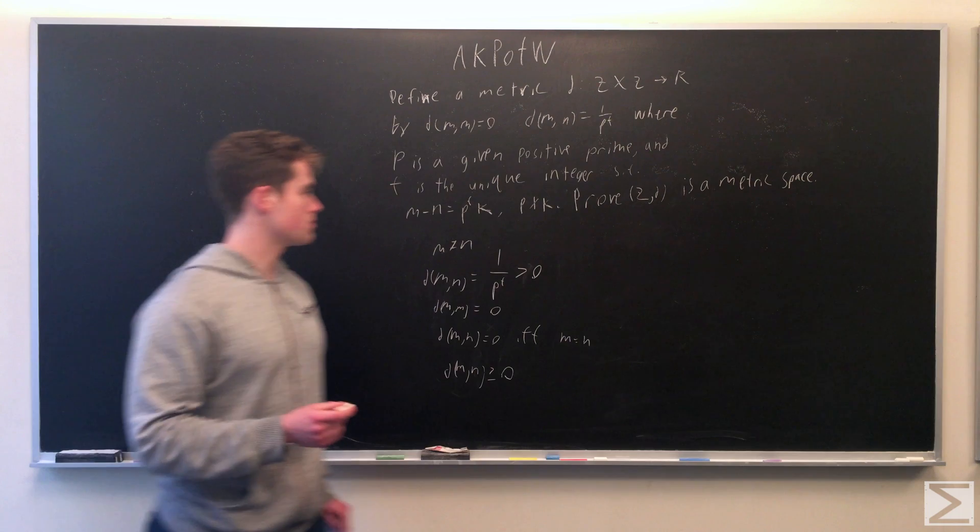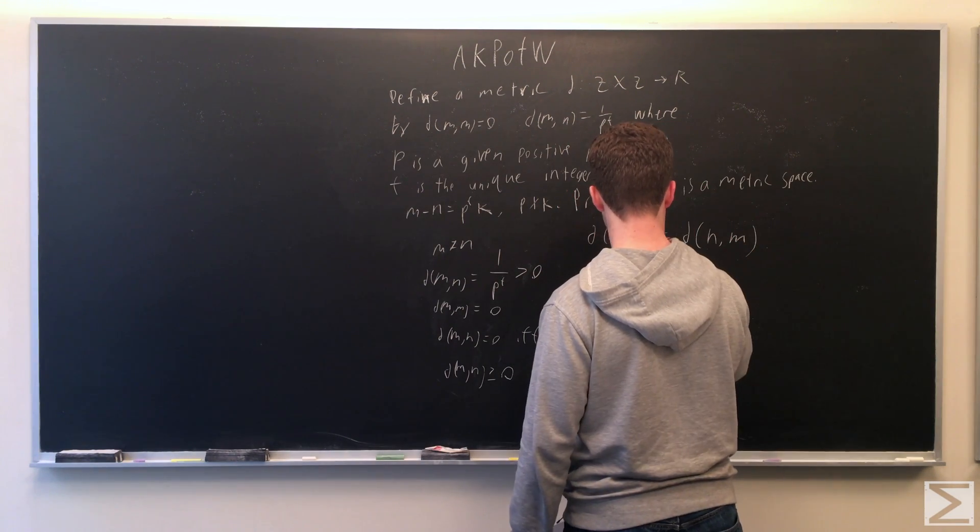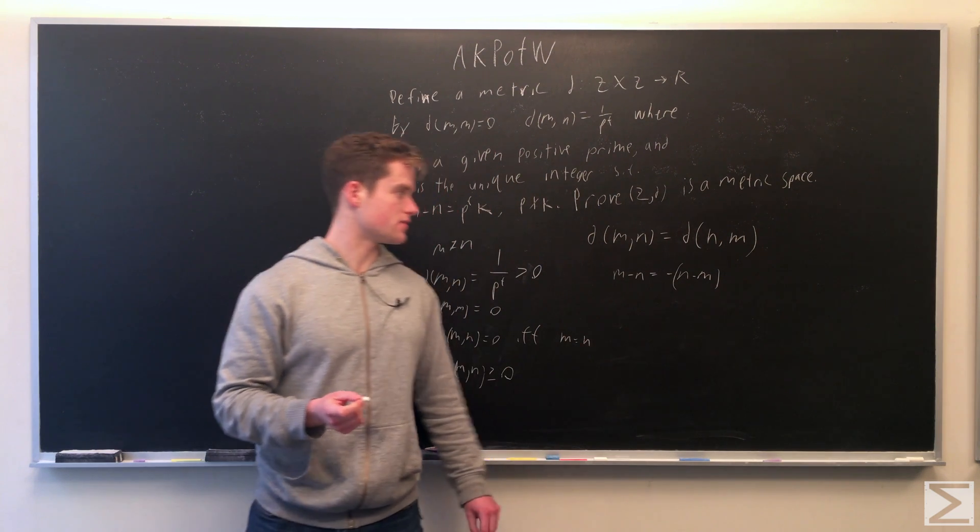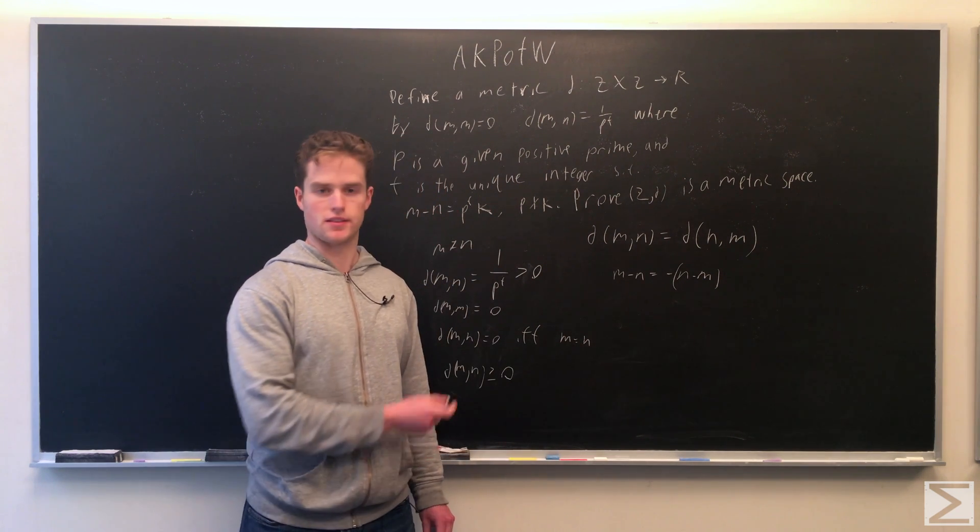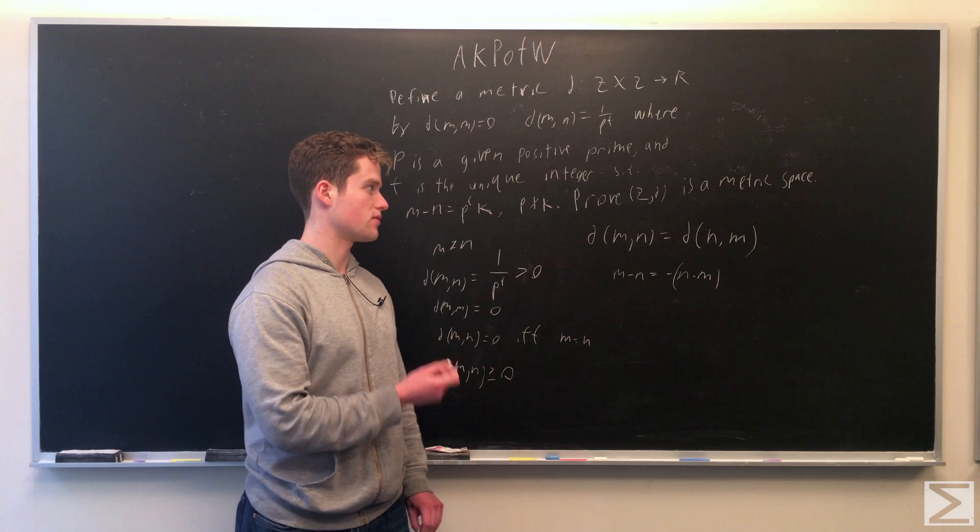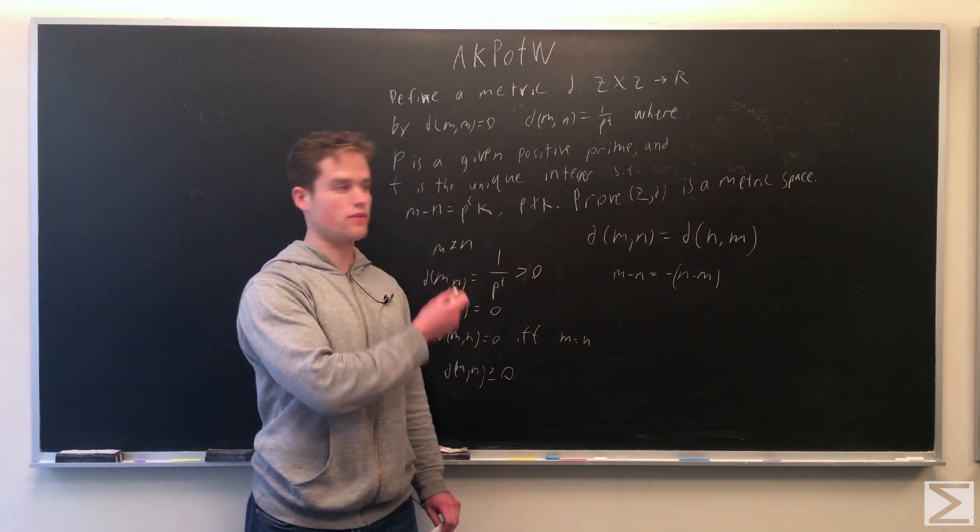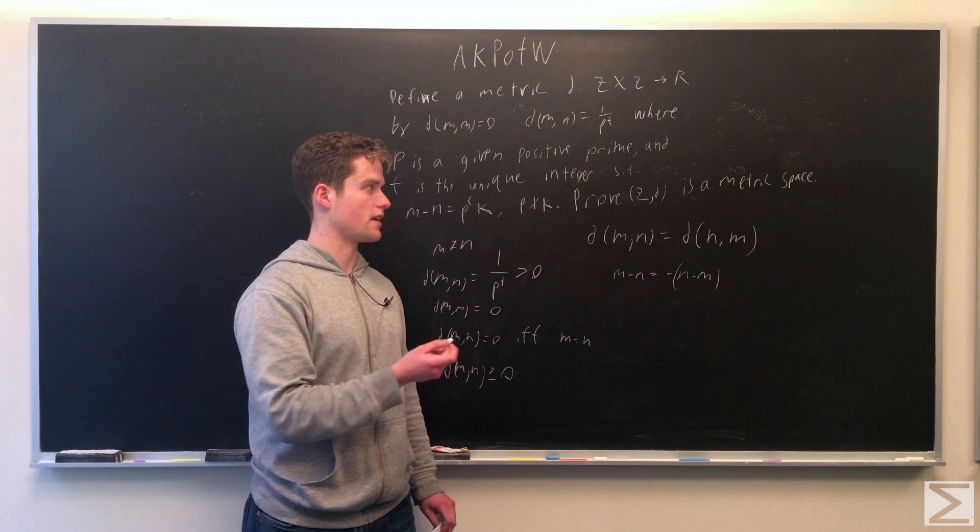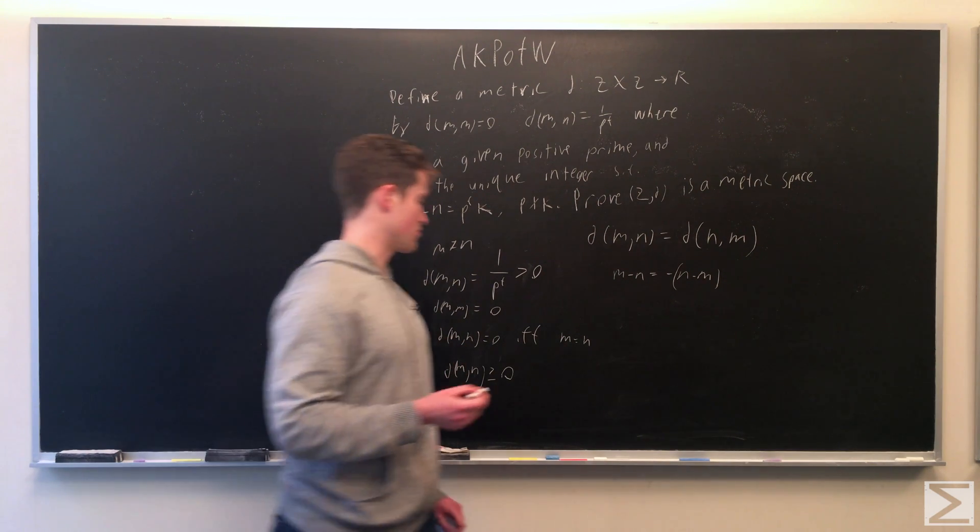Third axiom: note m minus n is just negative n minus m, and both of these are divisible by p the same amount of times. So t will be the same for both of them, and so the distance m comma n is equal to the distance n comma m.